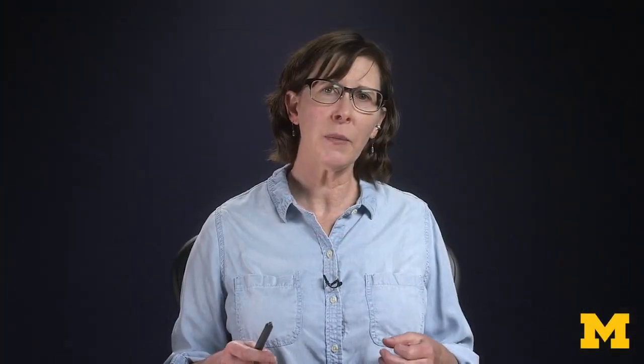We haven't talked about the diencephalon very much — we will in a subsequent lecture — but as a foreshadow, the diencephalon is all things thalamus. So the subthalamic nucleus is part of the diencephalon. In the next set of slides, I'm going to show you what these nuclei look like within coronal and horizontal sections of the brain.